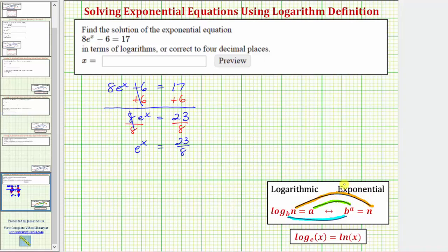So for this example, let's write the equivalent log equation. The log equation will have a logarithm in it and an equal sign. Now let's identify the base, the exponent, and the number. Well, the base is e, so we have log base e. Log base e is natural log, so we'll use natural log in the next step.